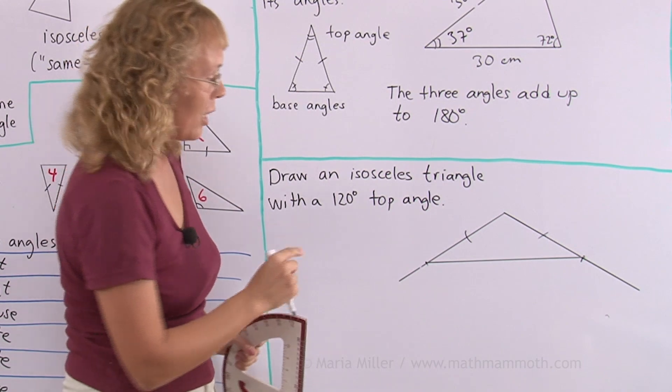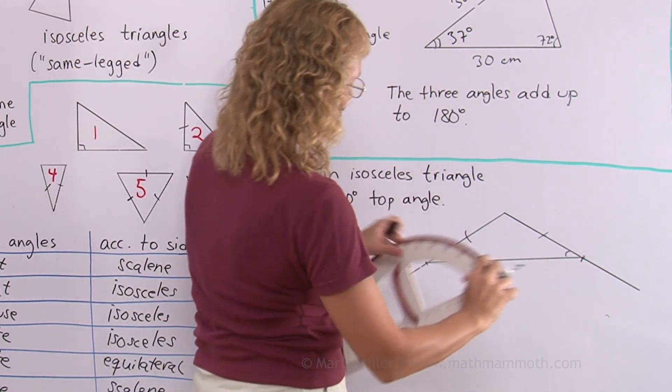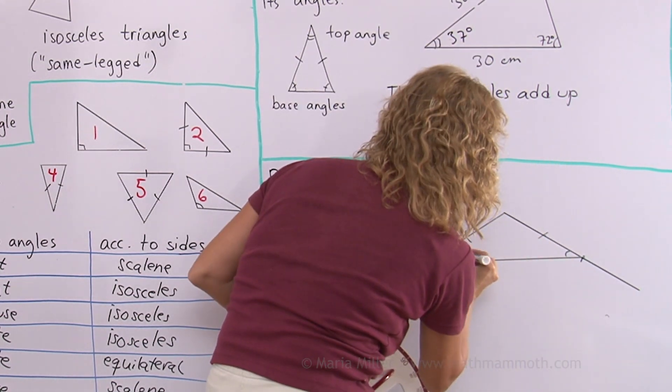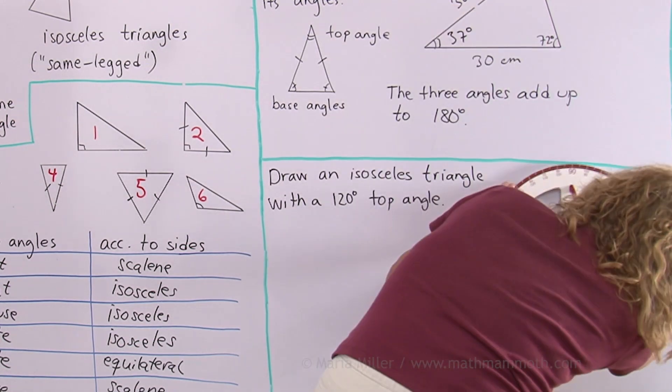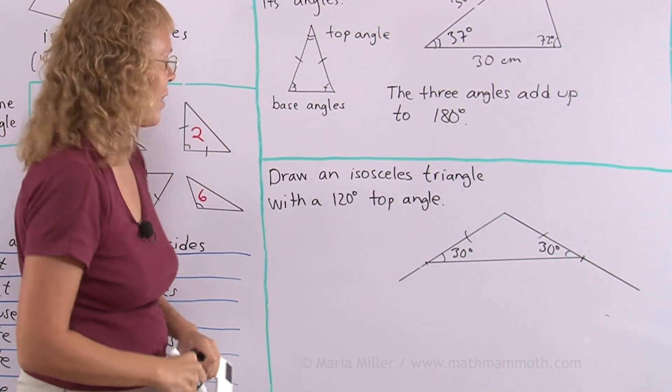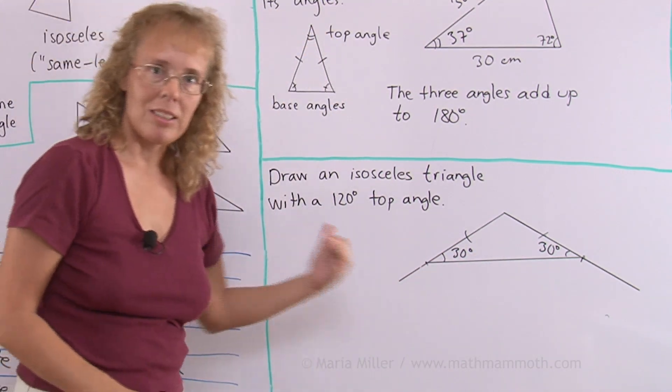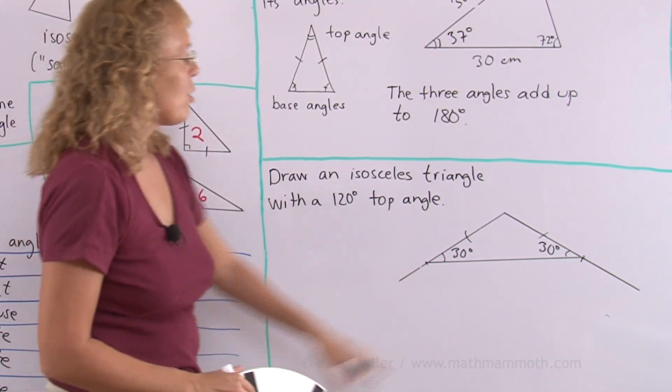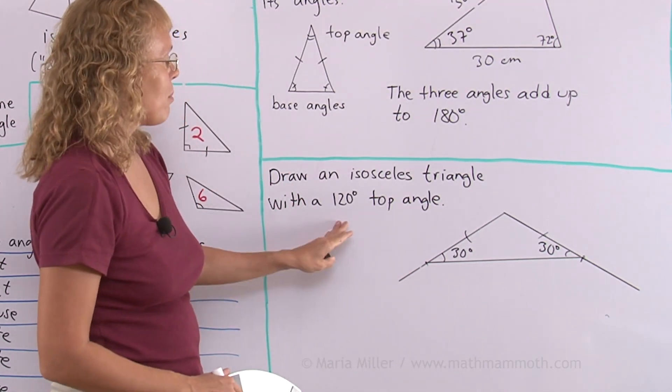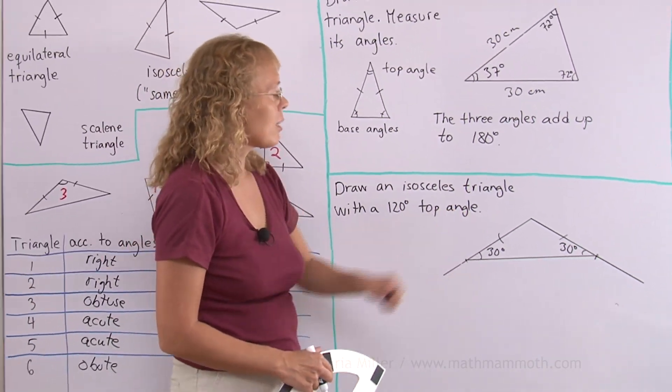Now I will measure those two base angles here. These ones. Now let's check what I get. Do I get them to be congruent? This is 30. All is well. As you can see again 30, 30 and 120 adds up to 180 degrees. I could have found out this 30 degrees even without measuring. I could have calculated it by subtracting 180 minus 120 which is 60 and dividing that by 2.